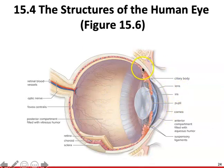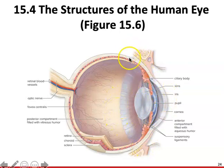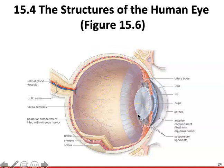The lens is attached to the ciliary body by suspensory ligaments. This region divides the eye into two compartments: the anterior compartment, which is in front of the lens, and the posterior compartment, which is behind the lens. The anterior compartment is filled with a clear, watery fluid called the aqueous humor, which is continually produced and then drained by tiny ducts.